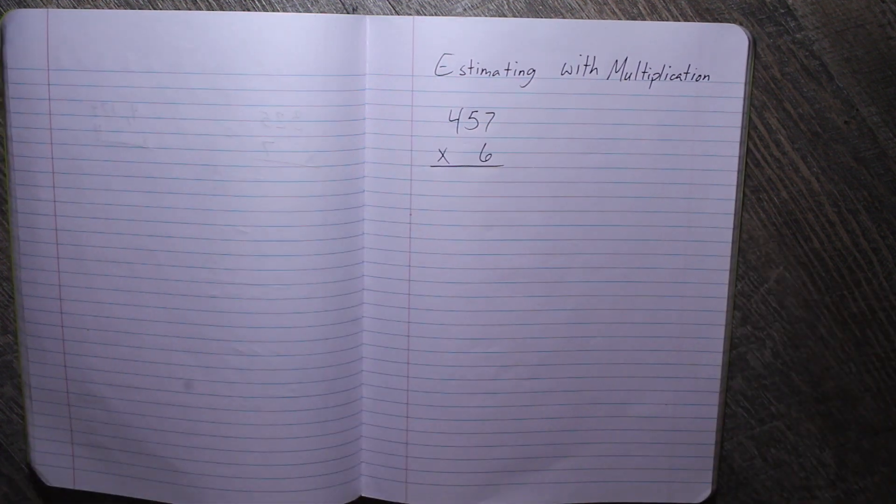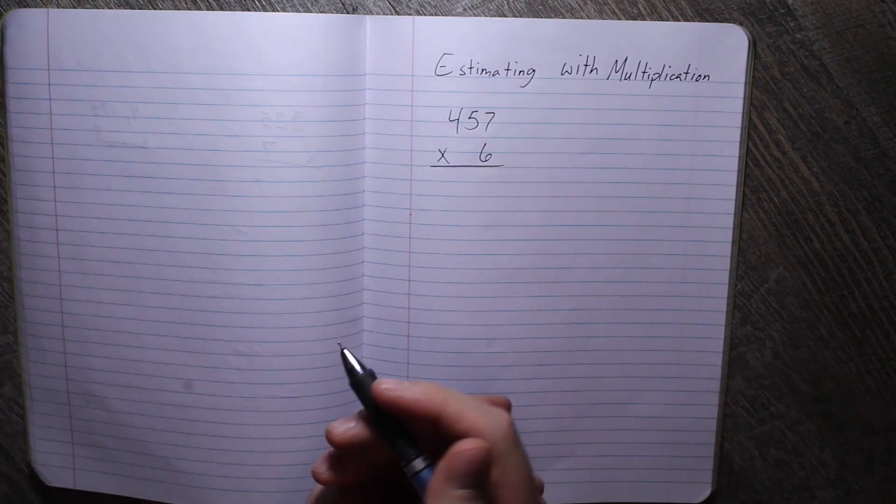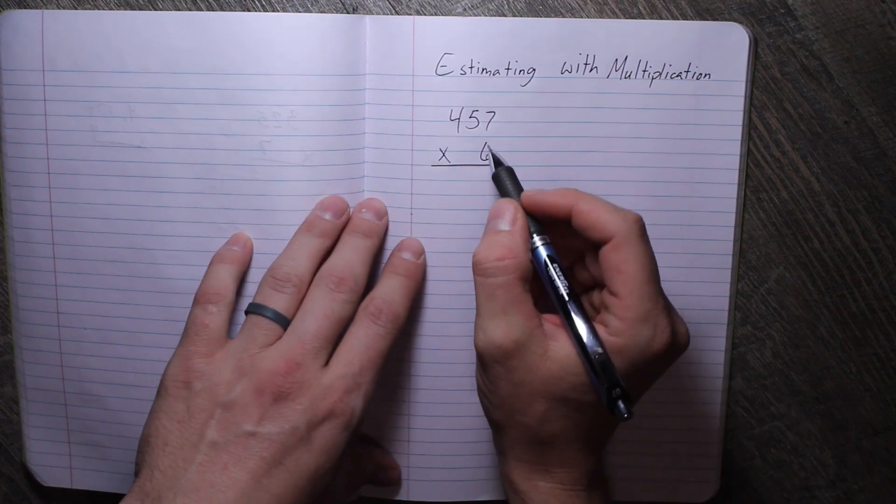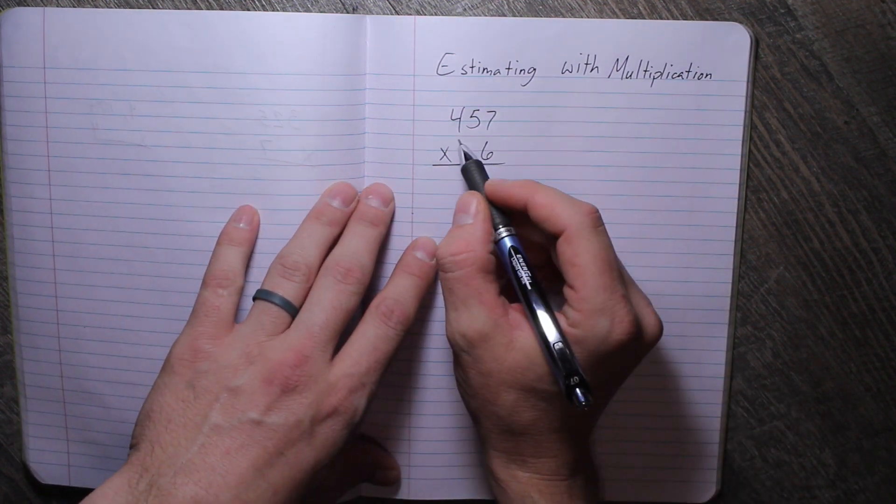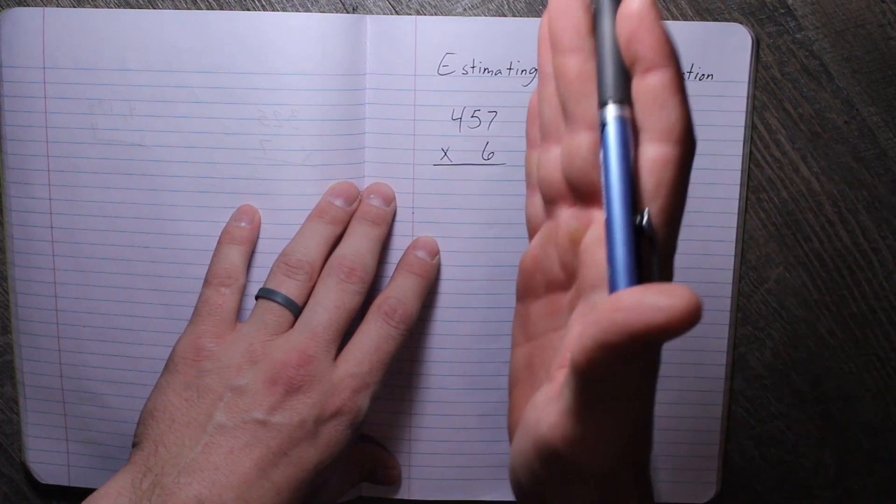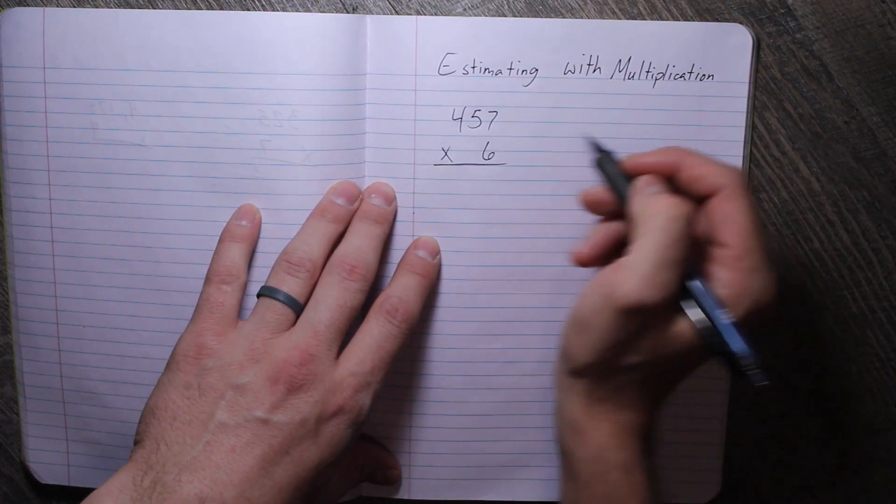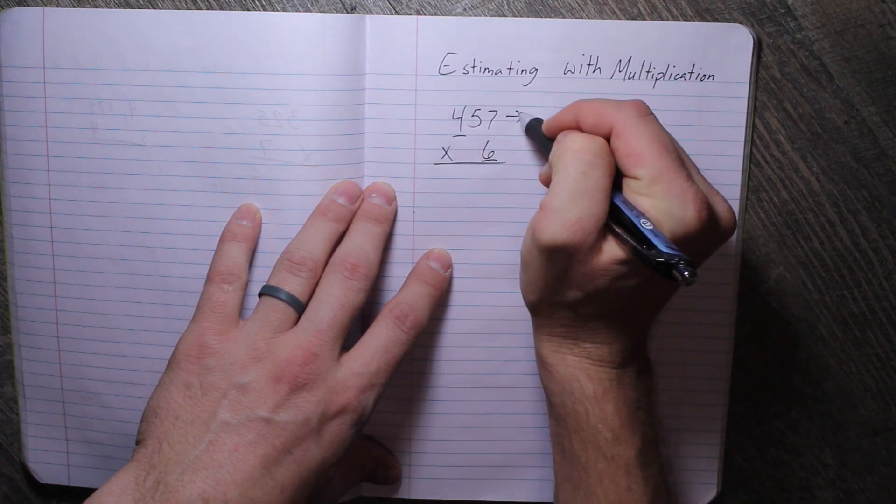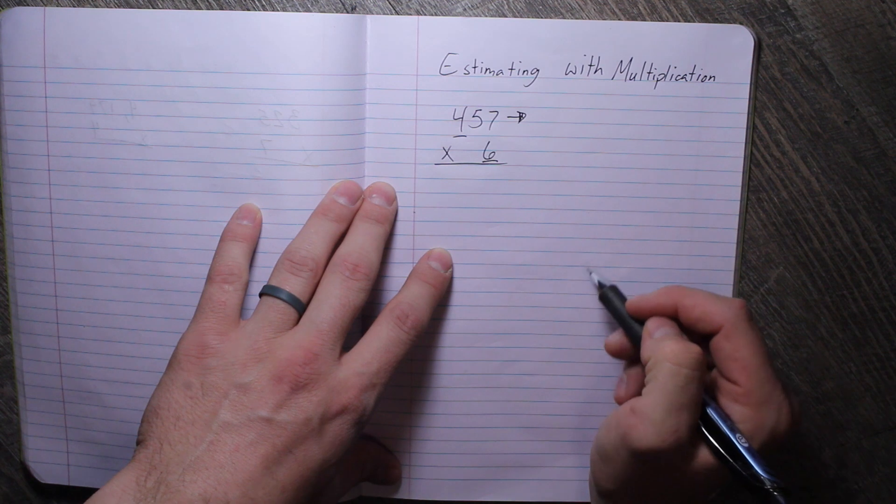What am I going to round to? Well, when we round with multiplication, the thing is you are going to round to the largest one. Unlike addition, where you may round to the same digit, here we're going to round each of them to the largest one they have. So this one is going to round to the hundreds place, since that's the largest.